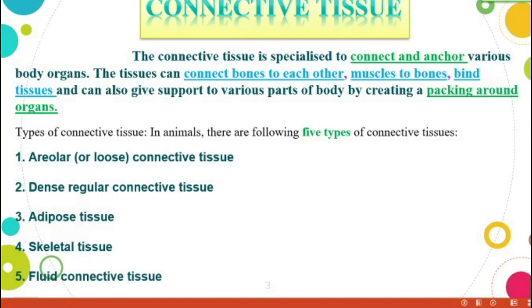First one: connective tissue. Connective tissue is specialized to connect and anchor various body organs. The tissue can connect bones to each other, muscles to bones, bind tissues, and can also give support to various parts of the body by packing around organs.